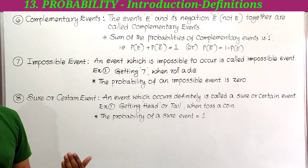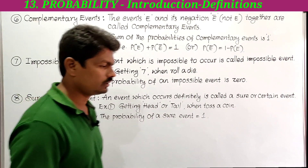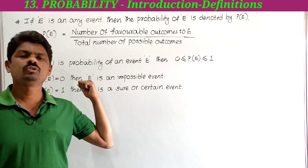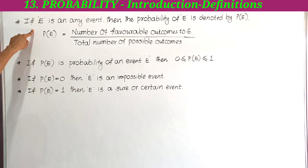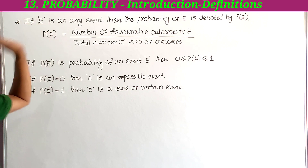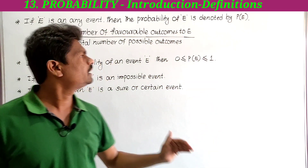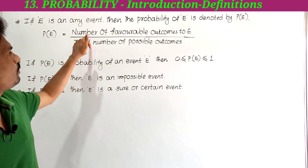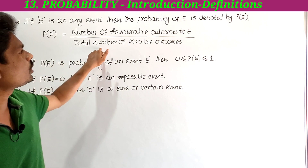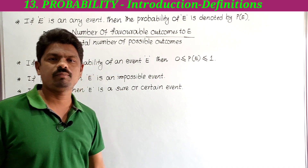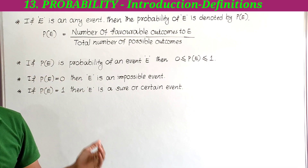Next we have to learn the formula for finding probability. If capital E is any event, then the probability of E is denoted by P(E), where P(E) = number of favorable outcomes to event E divided by total number of possible outcomes of an experiment.